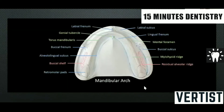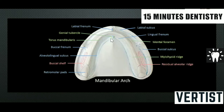In the mandibular arch, landmarks include: labial frenum, labial sulcus, buccal frenum, buccal sulcus, buccal shelf area, retromolar pad, mylohyoid ridge, alveolingual sulcus, lingual frenum. If palpable, genial tubercle and torus mandibularis are also noted.